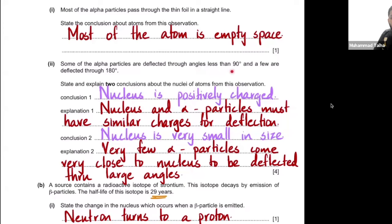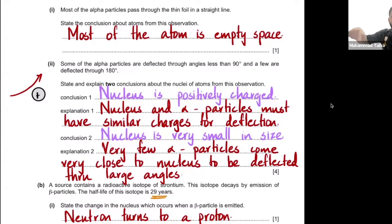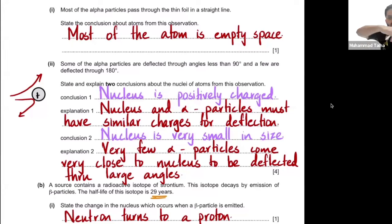Particles deflected through small angles passed near the nucleus and were repelled. Since alpha particles are positively charged and are deflected away, the nucleus must also be positively charged — like charges repel. The few particles deflected through very large angles flew very close to the nucleus and were almost reflected back. Since only a few experience this, the nucleus must be very small in size.